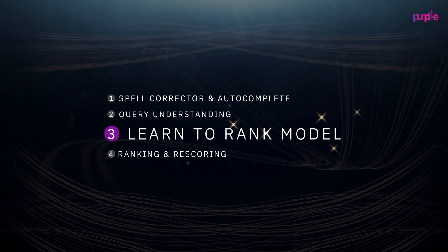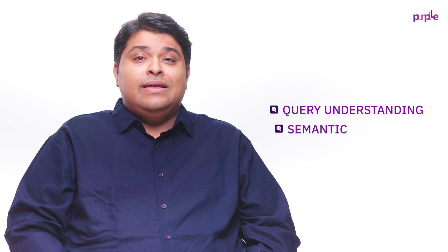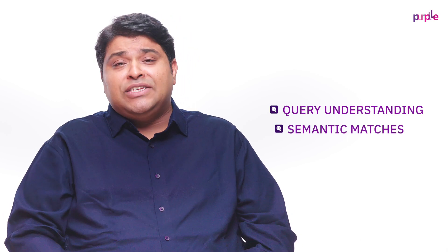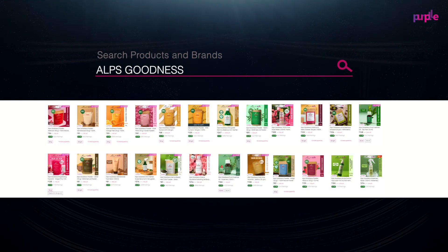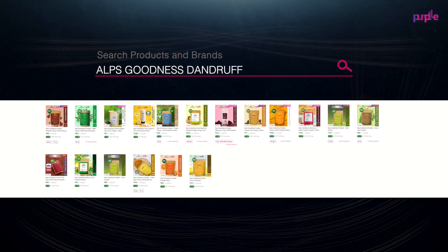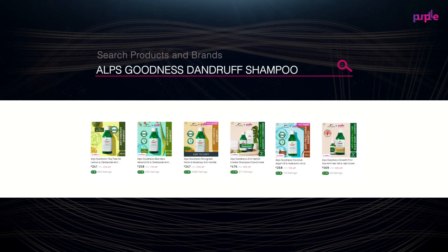Part three is the learn-to-rank model. We then use learn-to-rank, which is a machine learning model, to classify all the products relevant to your search term, based on our query understanding, the semantic matches, and the behavioral data. We therefore narrow down on the product candidates which are highly relevant to your search term.